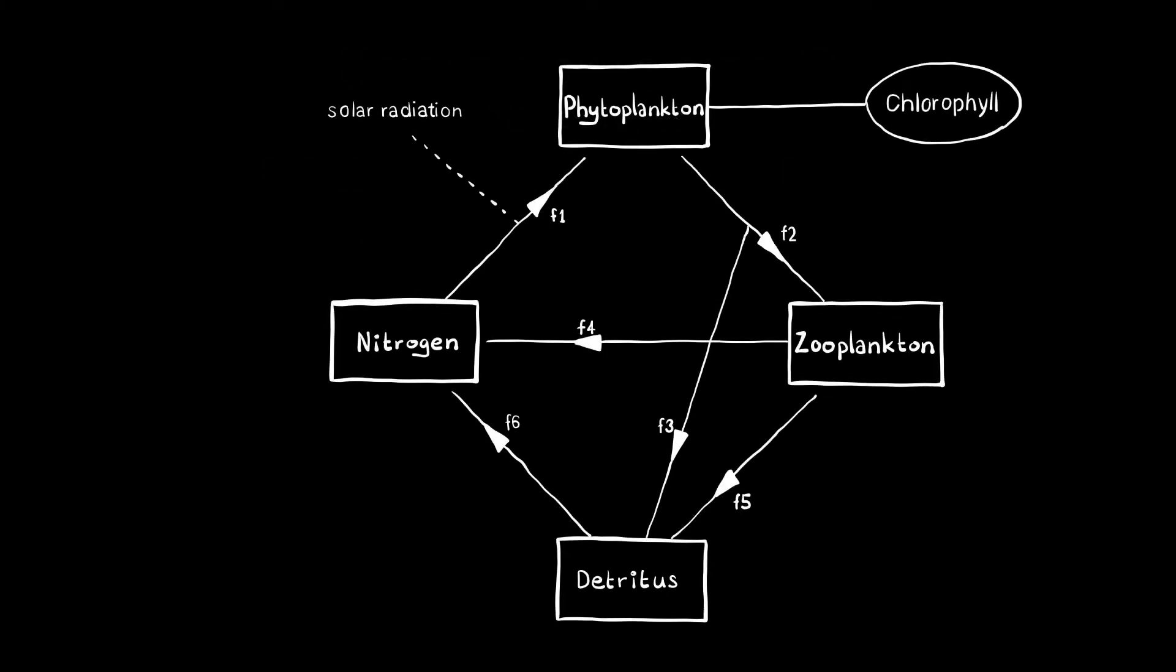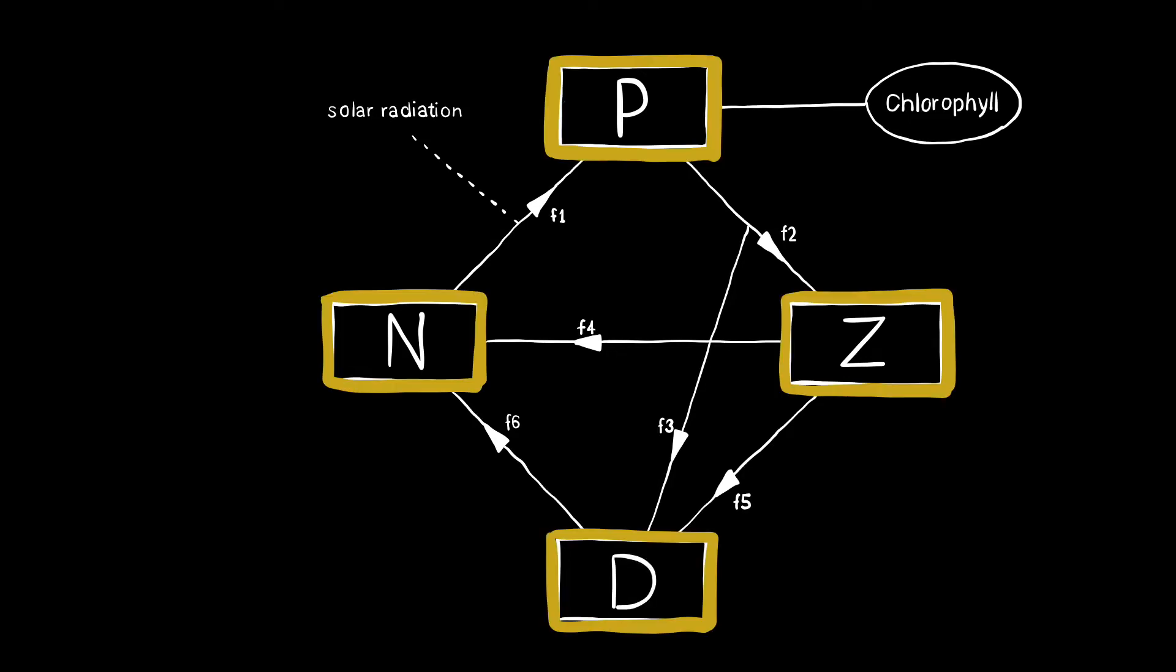For example, a small food web of nitrogen, phytoplankton, zooplankton and detritus can be represented with boxes and arrows.